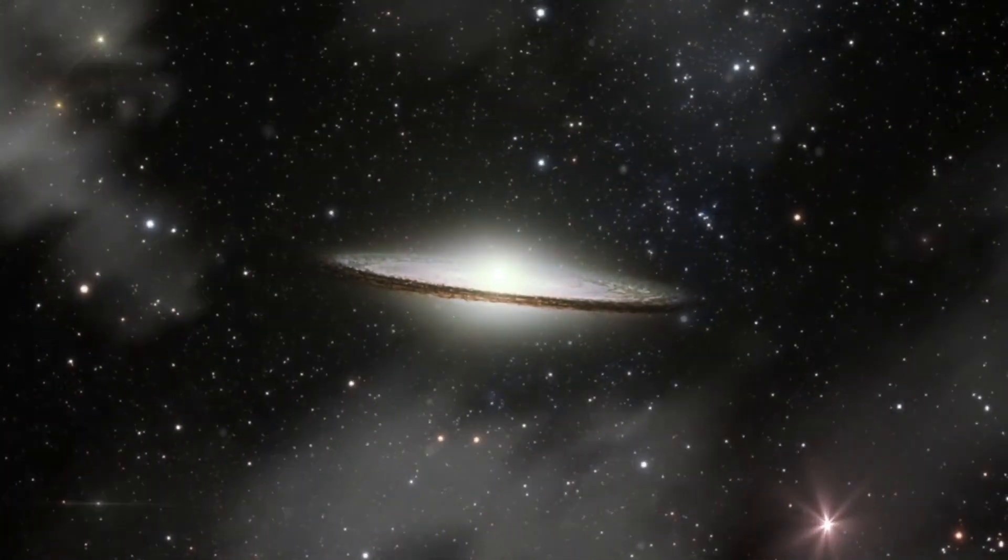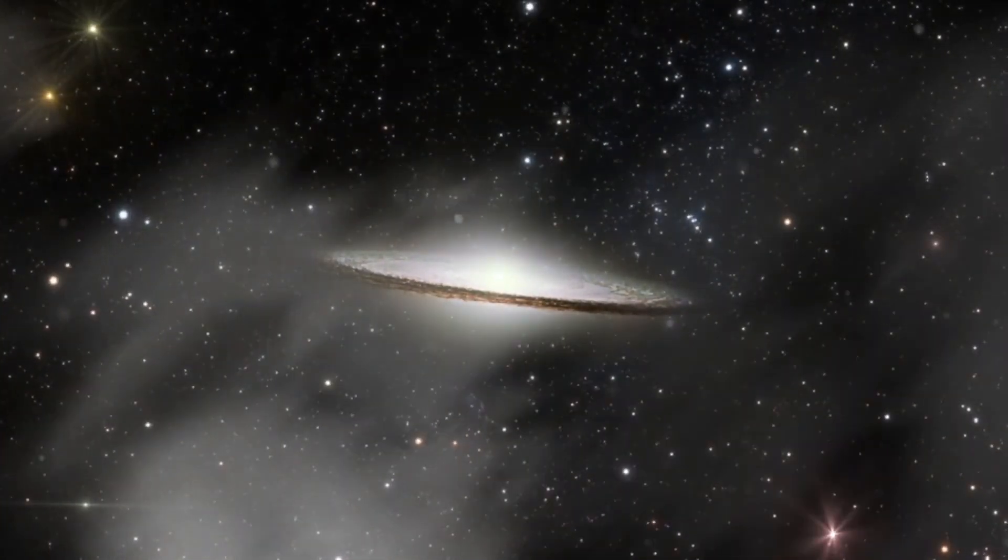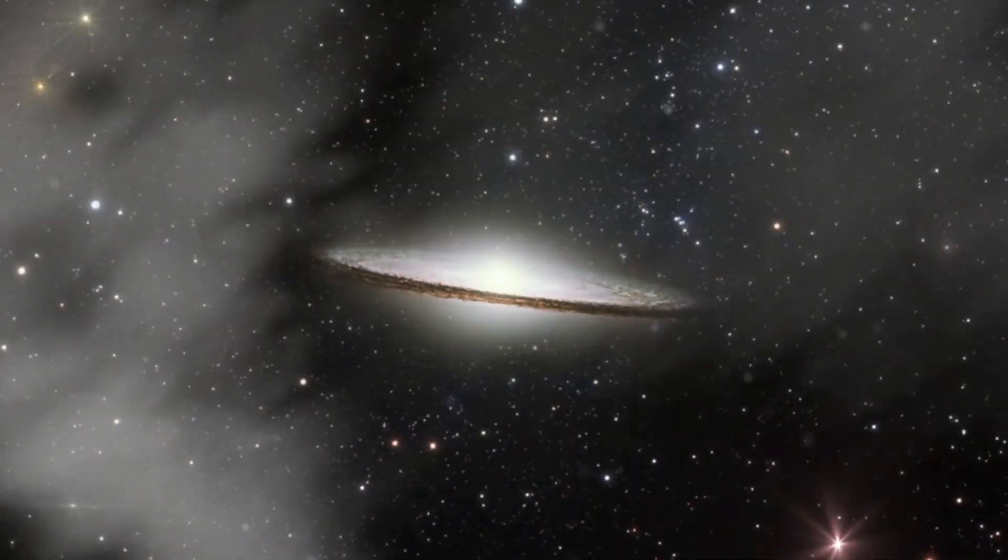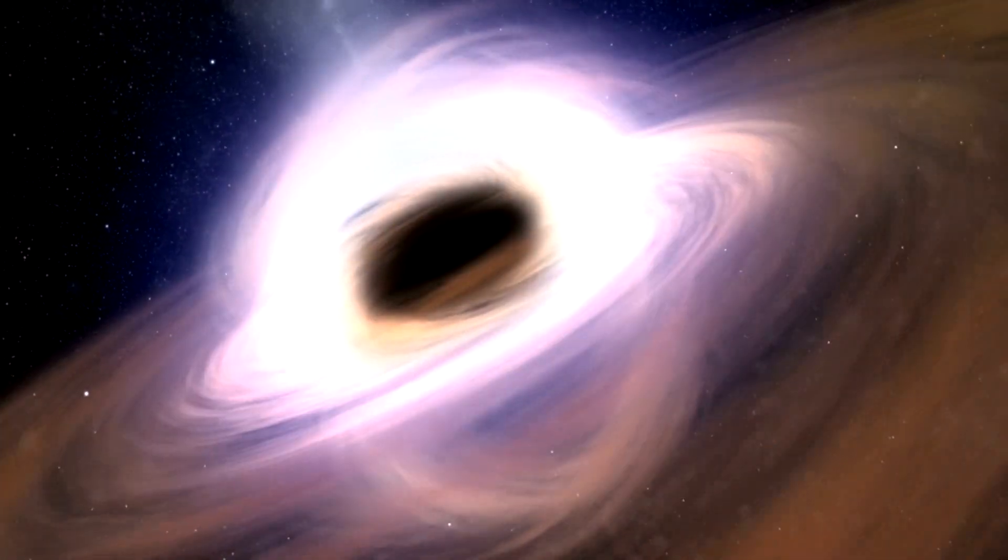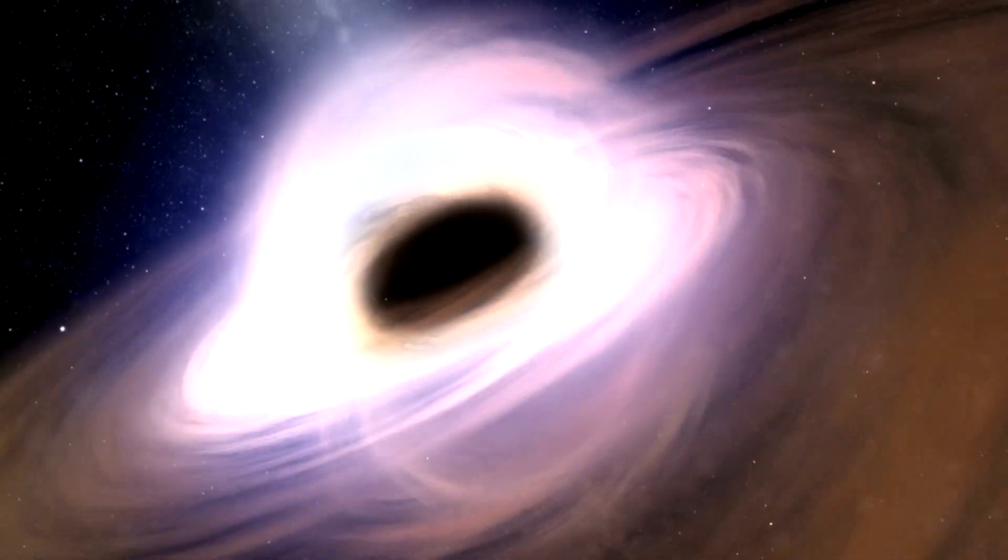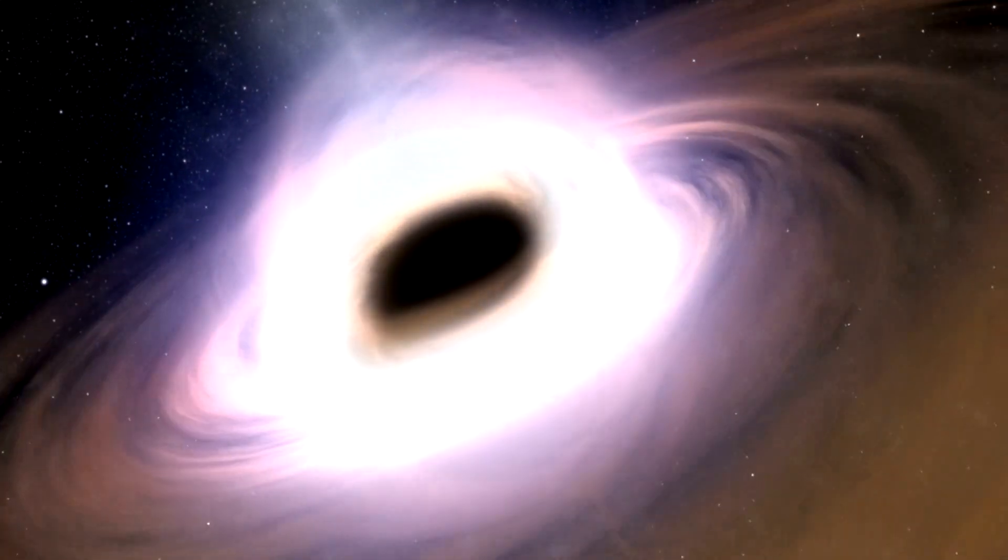A microquasar is a smaller cousin of the more massive quasars found at the centers of galaxies. GRS 1915-105 has earned this classification due to the relativistic jets it emits. These jets, composed of matter accelerated to near the speed of light, are reminiscent of the massive jets produced by supermassive black holes and quasars.